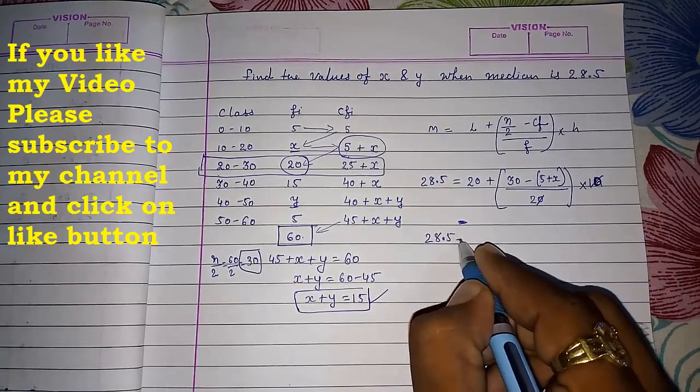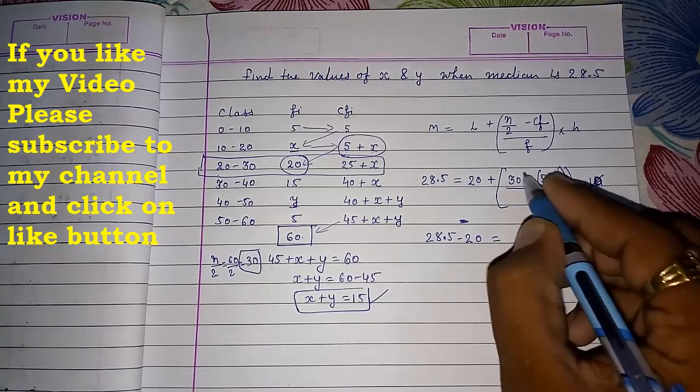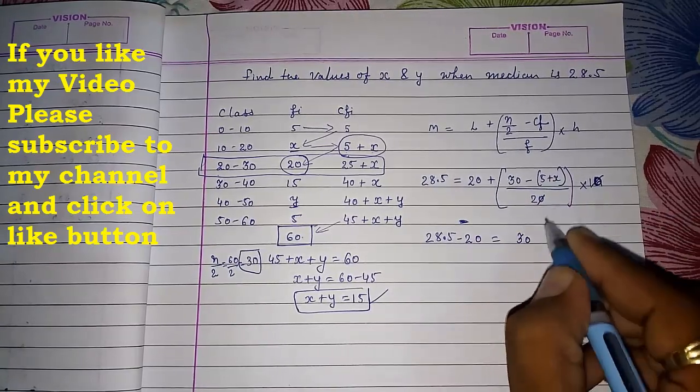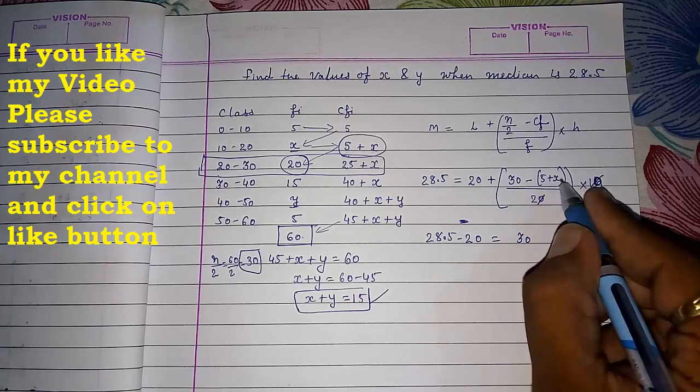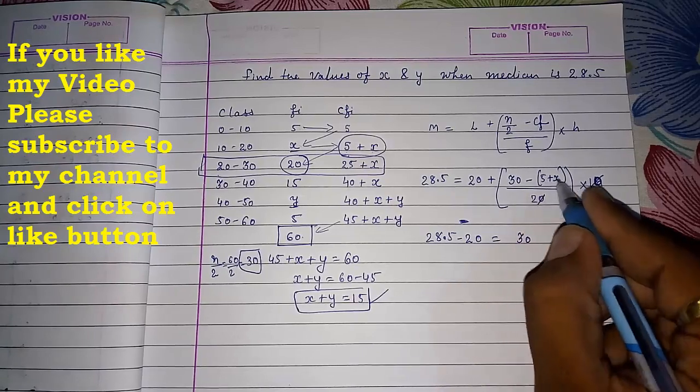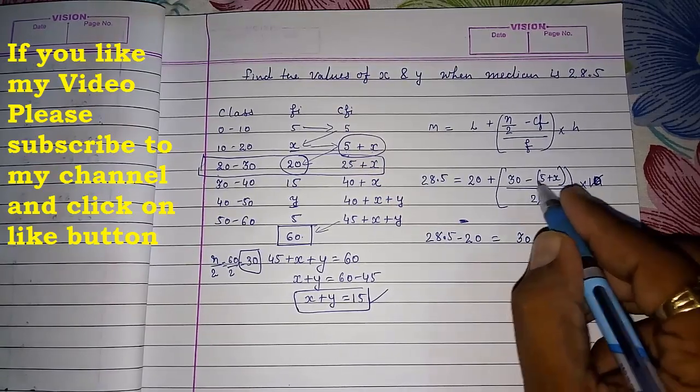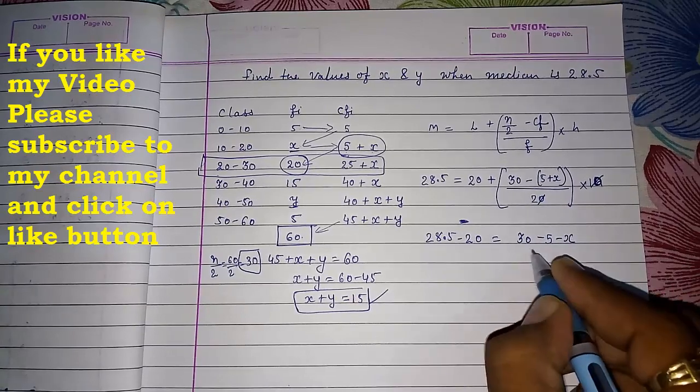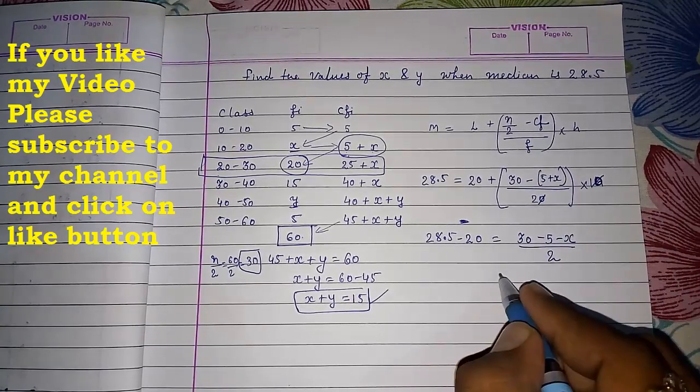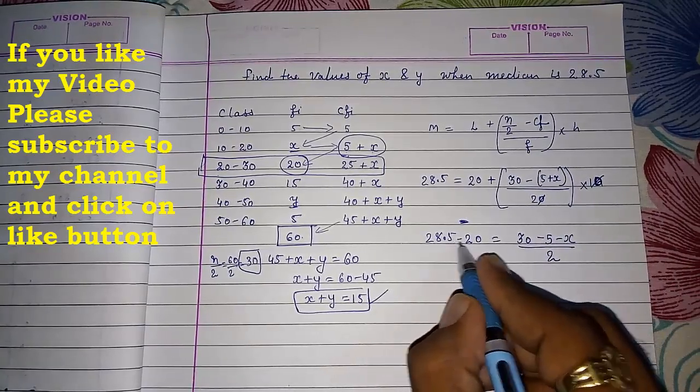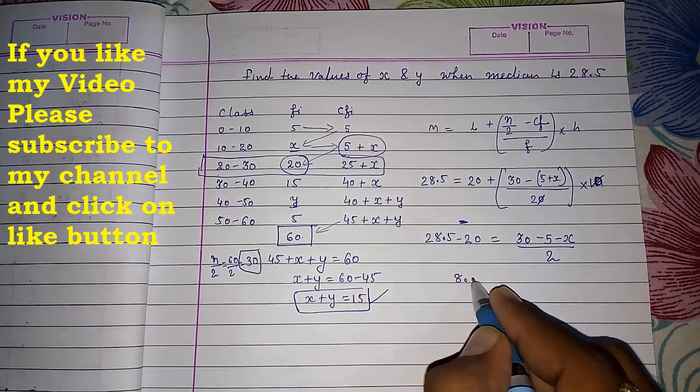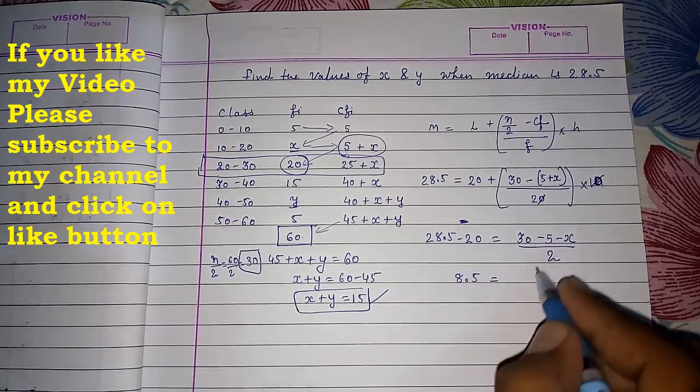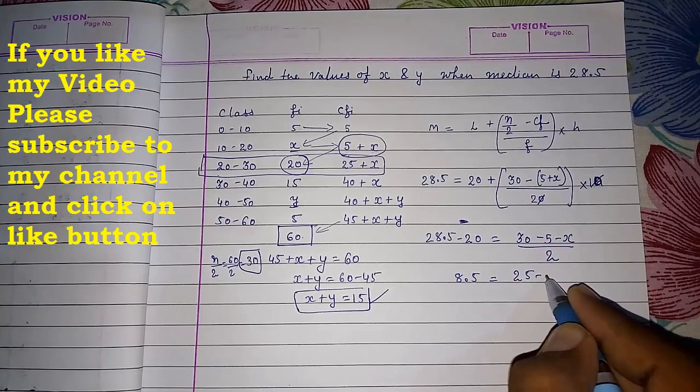28.5 minus 20 equals to, now open the bracket, 30 minus sign is there. So it will be given to this both. So it will be minus 5 and minus X by 2. So 28.5 minus 20 it will be 8.5 equals to 30 minus 5, 25 minus X.